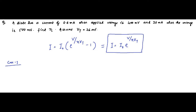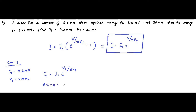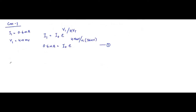Case 1: the forward current is 0.6 milliampere for a forward voltage of 400 millivolt. The diode equation for this case is: I₁ = I₀ · e^(V₁ / η·Vt), which gives 0.6 mA = I₀ · e^(400 mV / η × 26 mV). This is equation one.